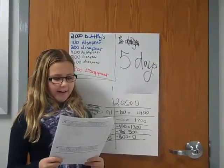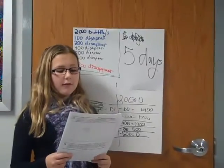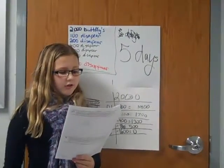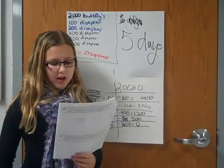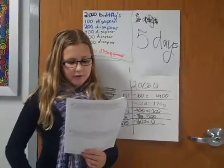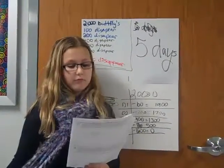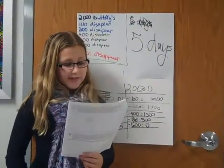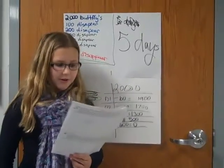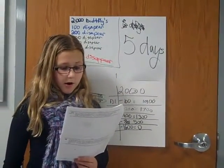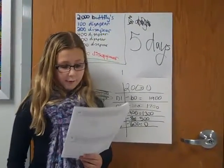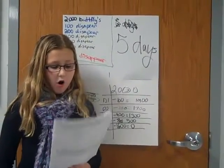Every year the monarch butterflies come to the milkweed field behind Grandma Timberman's cottage. Usually a huge number arrives, then each day some of them disappear. This year there were 2,000 butterflies. On the first day after they arrived, 100 disappeared. On the second day, twice the amount disappeared, or 200 butterflies are gone. Each day the number of butterflies that disappeared doubles from the number that left the day before. How many days will it take for all butterflies to disappear?